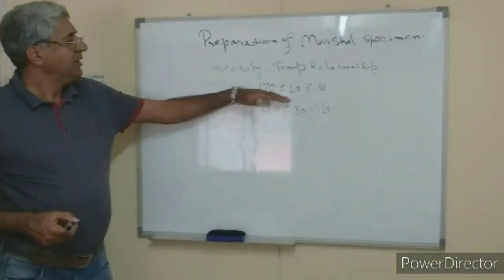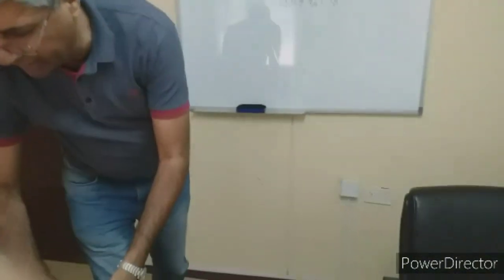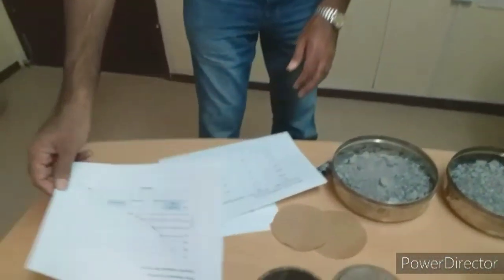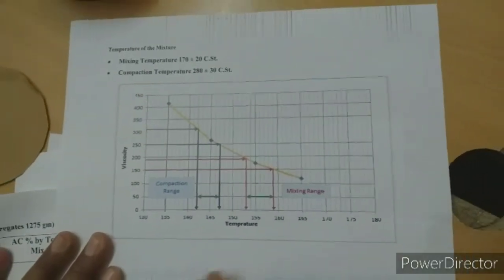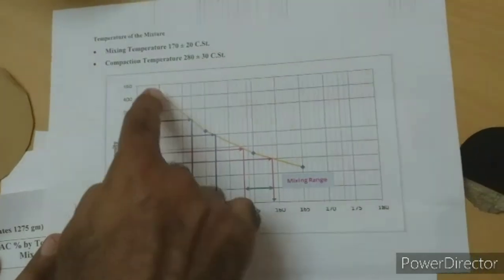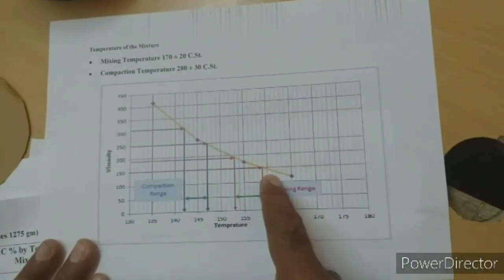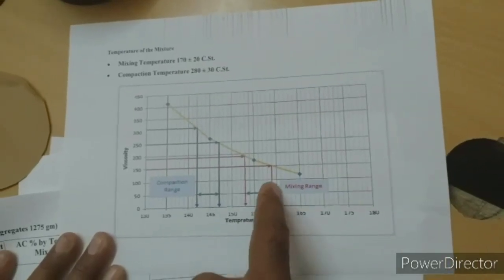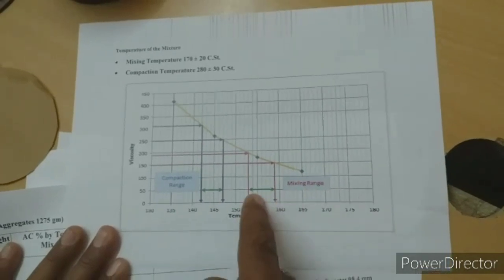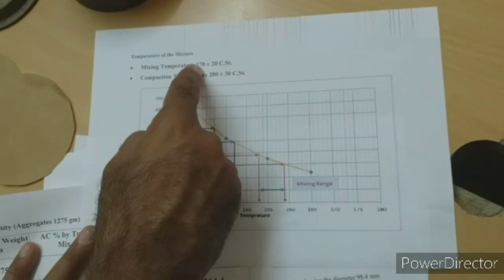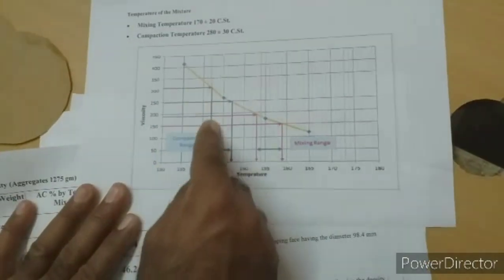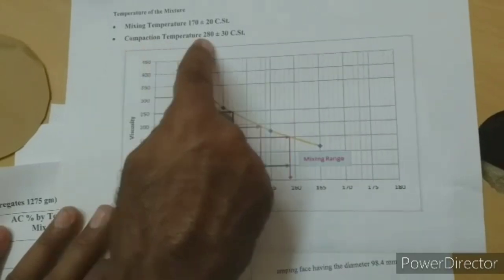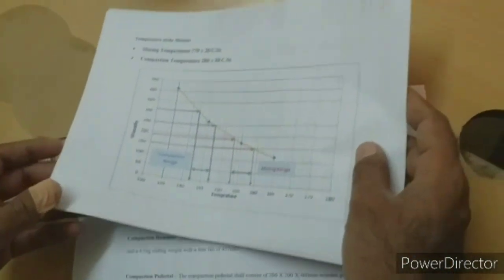I will show you a graph I have already plotted. The x-axis is temperature and the y-axis is viscosity. As temperature increases, viscosity decreases — so viscosity is dipping downward. The mixing range corresponds to 170 plus or minus 20 CST and the compaction range corresponds to 280 plus or minus 30 CST, each giving a specific temperature range on the graph.